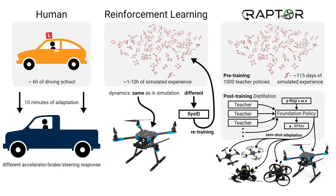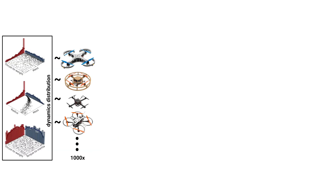we present our RAPTOR method for training an adaptive foundation control policy. We train the foundation policy by first sampling 1,000 quadrotor dynamics parameters from a distribution over realistic quadrotors.